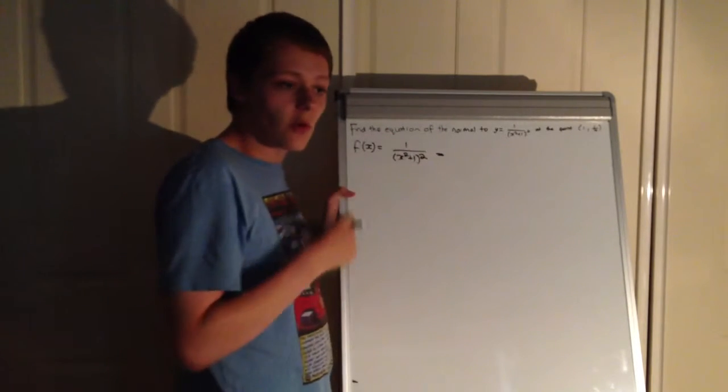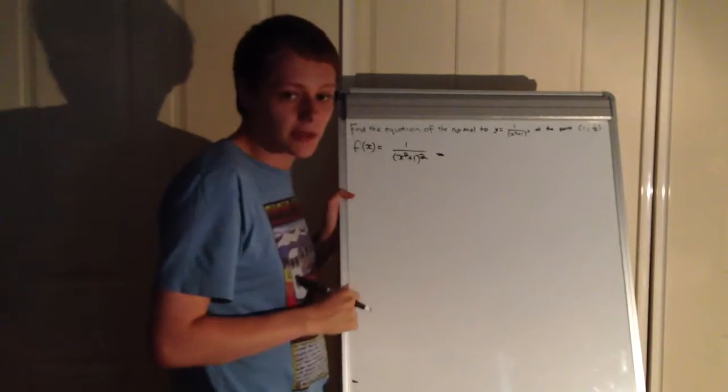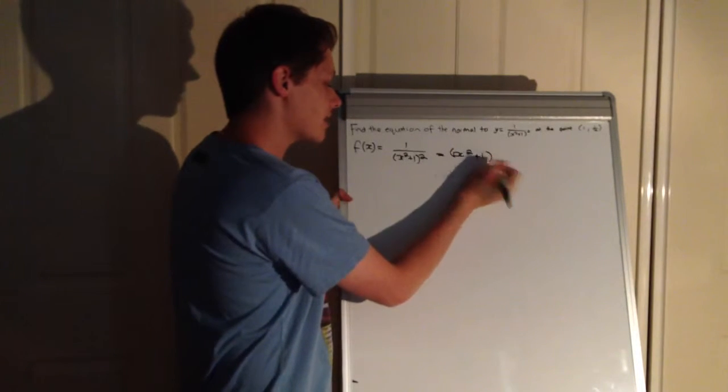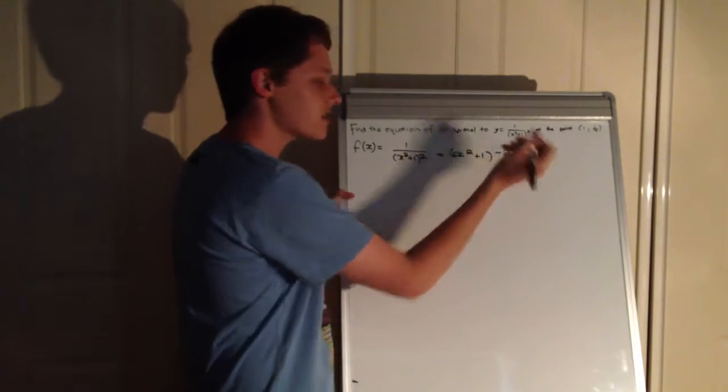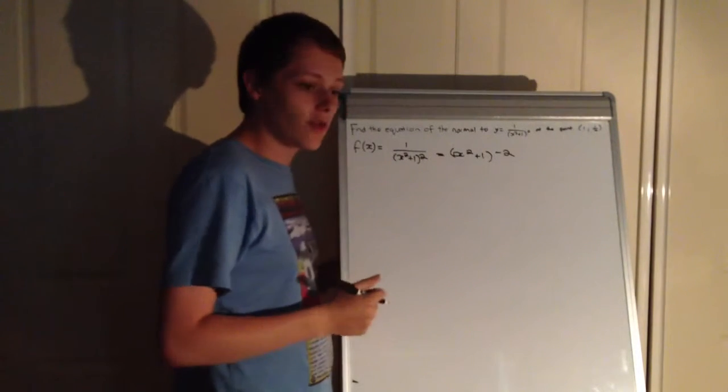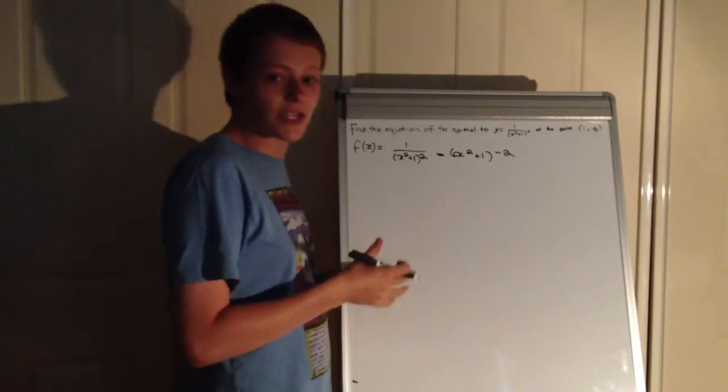Because this is 1, we don't even need to have that out the front of the bracket. So we end up getting (x² + 1)^(-2). Now we have it in a format where we can differentiate it using the chain rule.